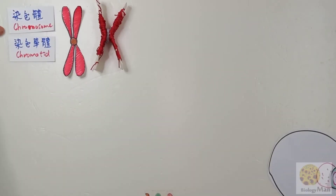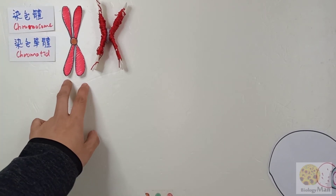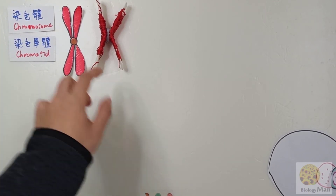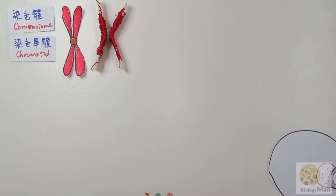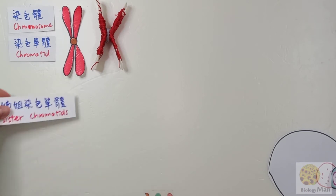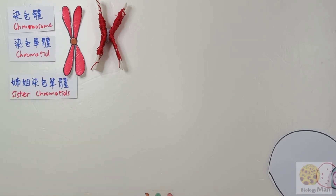After learning what chromosome and chromatid mean — two chromatids will form one chromosome — let's learn some more terms. The one I'm going to talk about now is sister chromatids and non-sister chromatids.